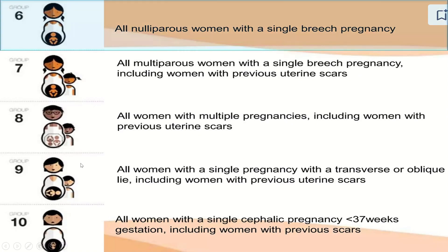The unique point about group six is that this woman is carrying a breech baby and she is nulliparous. So all nulliparous women with a single breech pregnancy are included in group six. Women in group seven are also carrying a single breech pregnancy but they are multiparous. All multiparous women with a single breech pregnancy, including women with a previous uterine scar, are included in group seven.